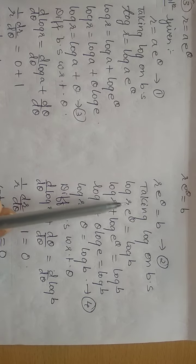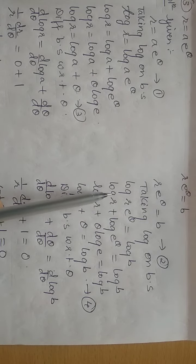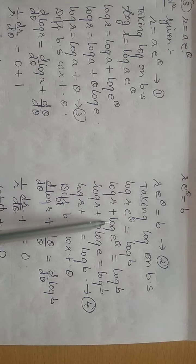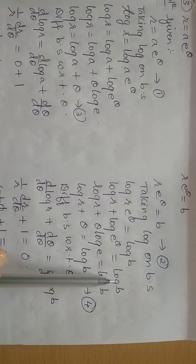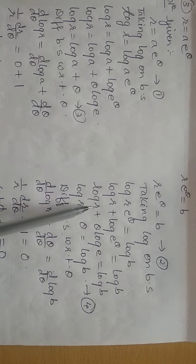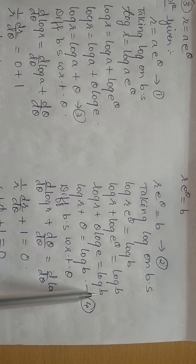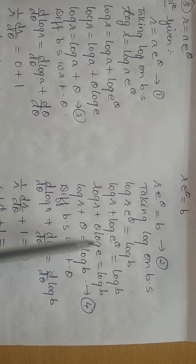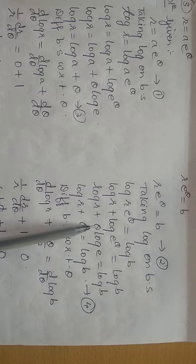Similarly, taking log on both sides of the second curve r·e^θ = b: log r + log(e^θ) = log b. Applying log a^m = m·log a, and since log e to the base e is 1, we get log r + θ = log b.